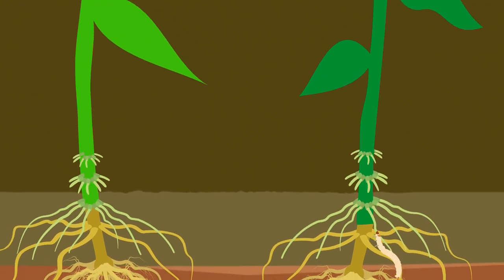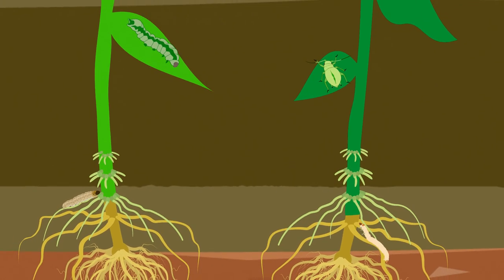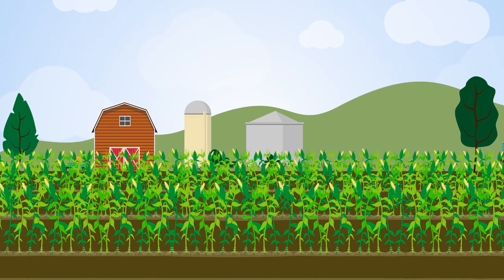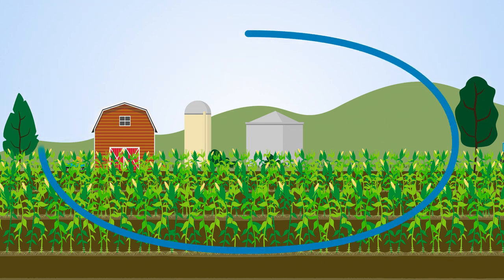The western corn rootworm is a difficult but fascinating pest. Learning about its tricks allows us to understand the strategies that herbivores can use to exploit plants. Ultimately, this knowledge may pave the way for the sustainable control of agricultural pests.